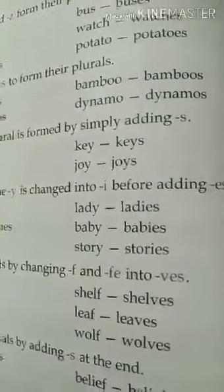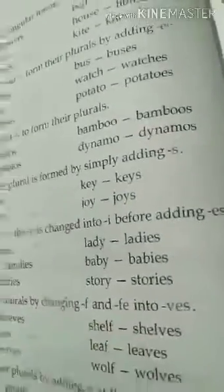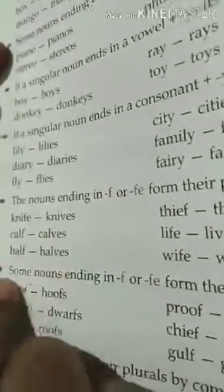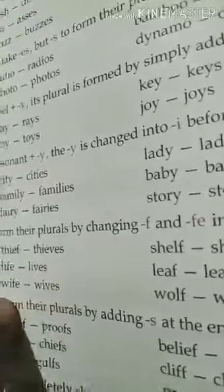Nouns ending in F or FE form their plural by changing F or FE into VES: knife → knives, calf → calves, half → halves, thief → thieves, life → lives, wife → wives.